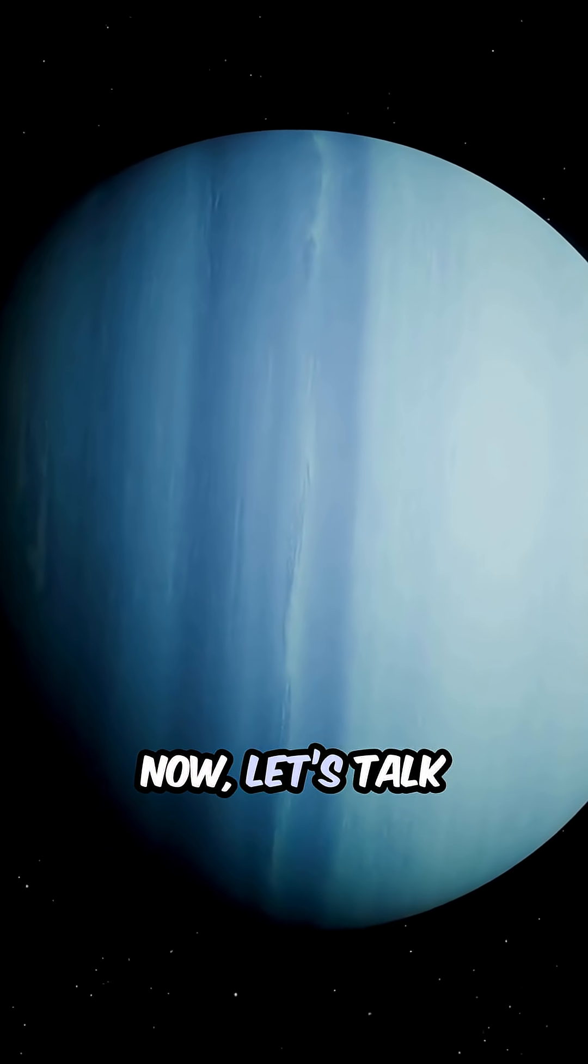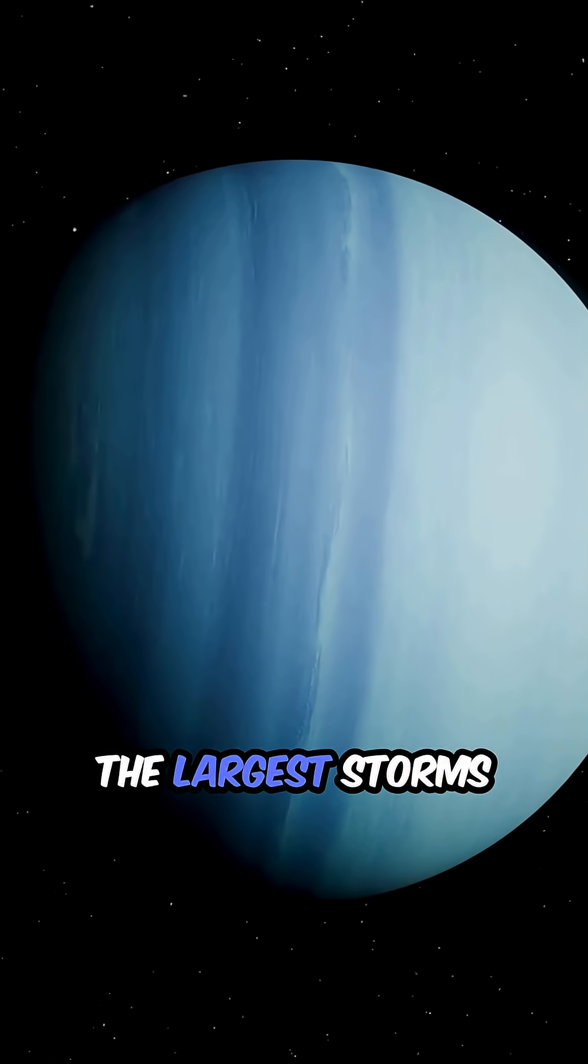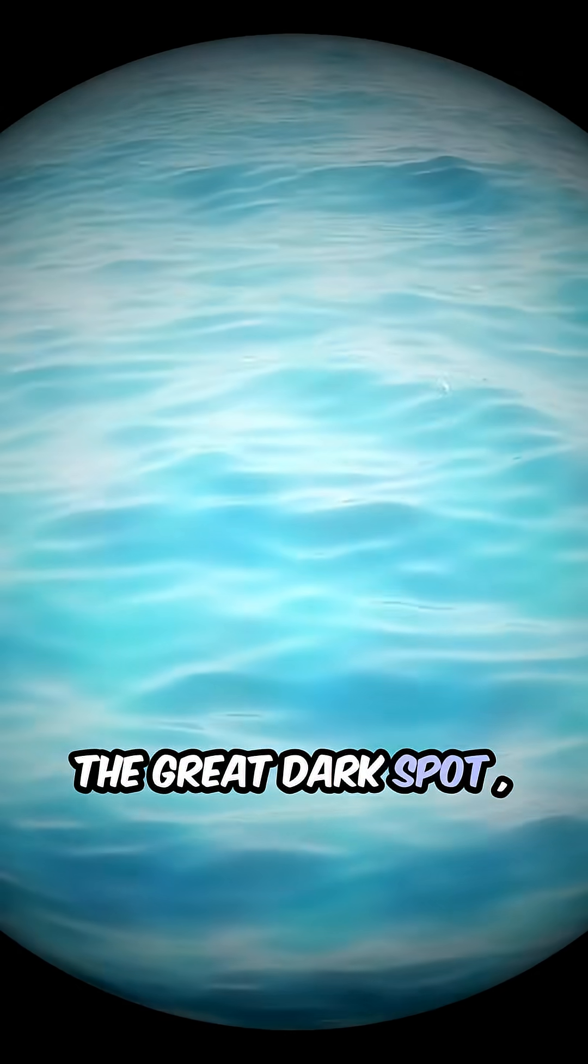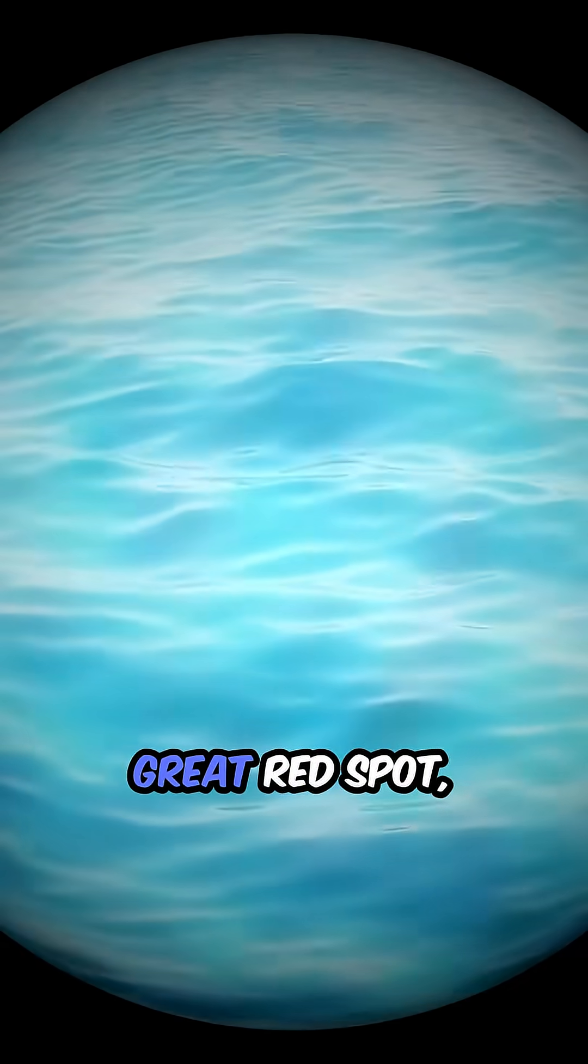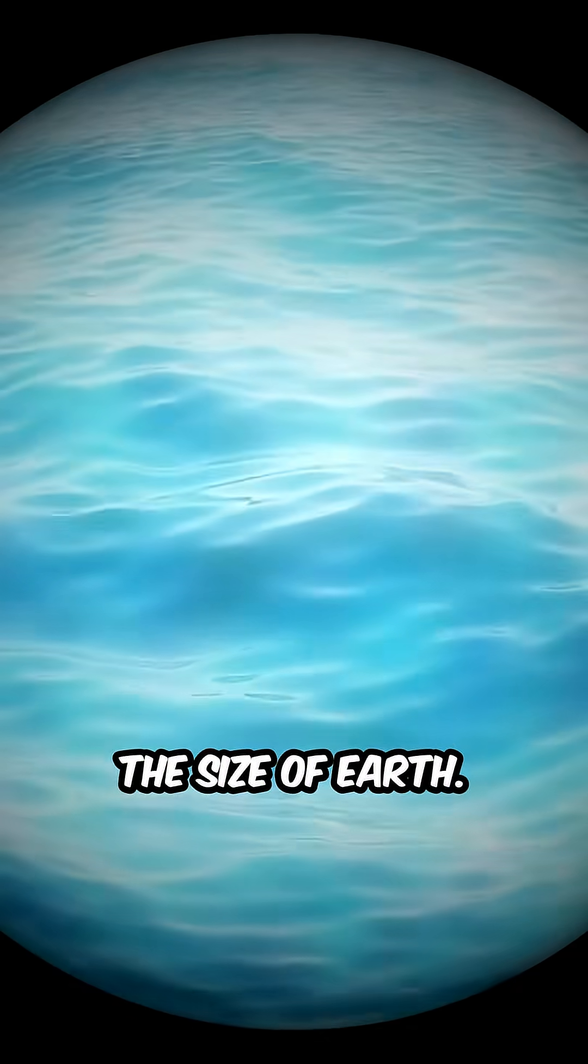Now, let's talk about its storms. Neptune has some of the largest storms ever observed in our solar system. The great dark spot, similar to Jupiter's great red spot, was a massive storm that spanned about the size of Earth.